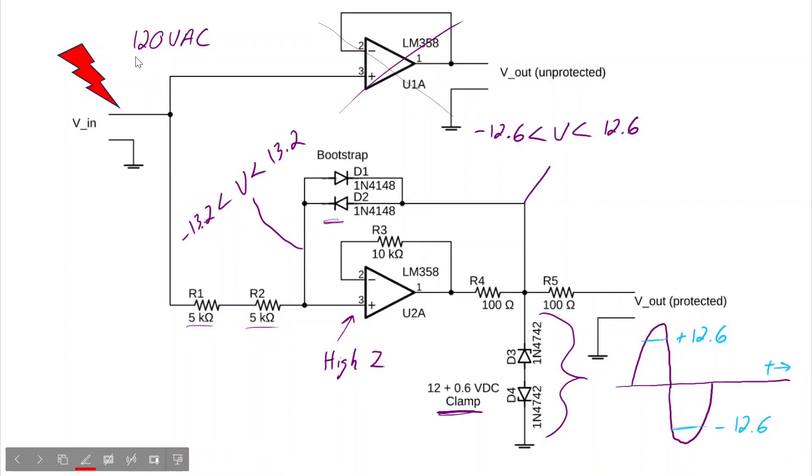Now, suppose we really did connect up to 120 volts. That means at a peak there would be a voltage of approximately 170 volts here. Our clamp would clamp that to 13.2. The voltage here would be 12.6, which implies that our downstream devices are going to be okay. The question is, will everything else be okay as well?